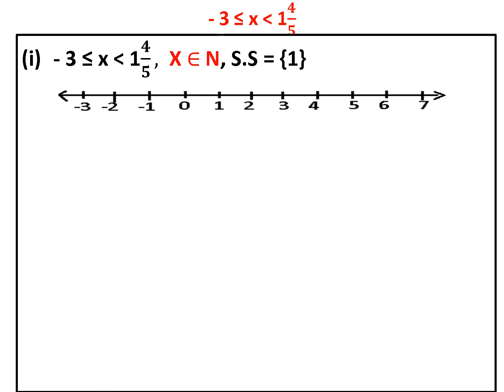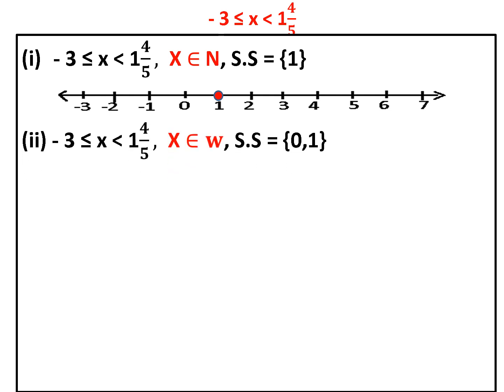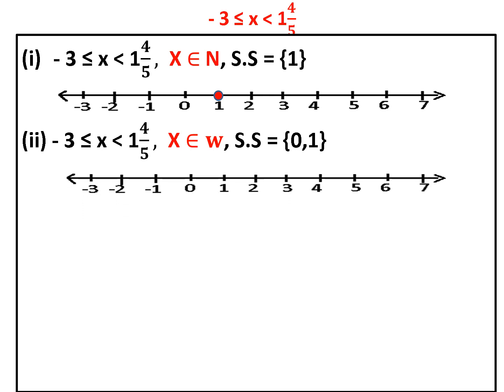For x belongs to W, we need all whole numbers between minus 3 and 1 and 4 upon 5, which are 0 and 1. Hence, our solution set is {0, 1}, and we represent 0 and 1 on the number line.